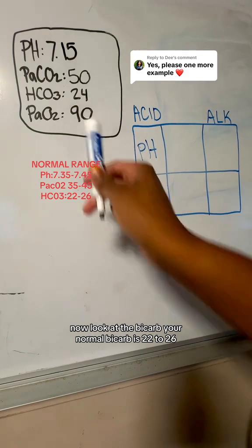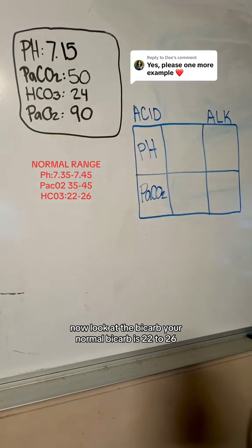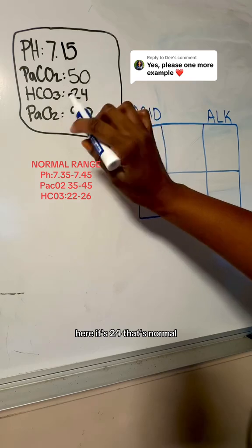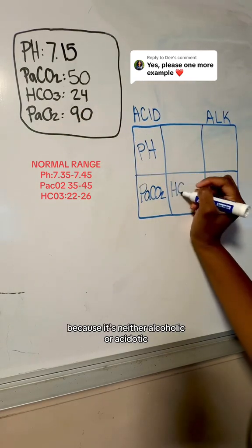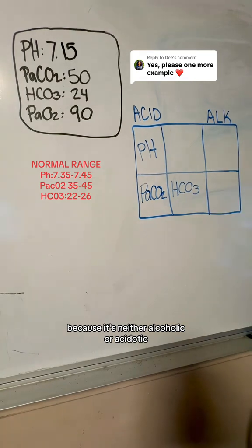Now look at the bicarb. Your normal bicarb is 22 to 26. Here it's 24, that's normal. You're going to put this in the middle column because it's neither alkalotic or acidotic. Now let's interpret it.